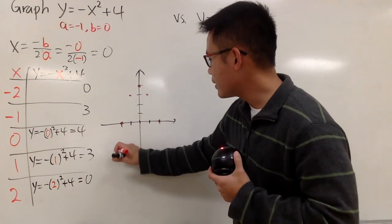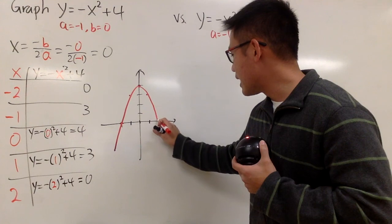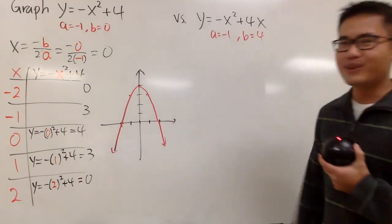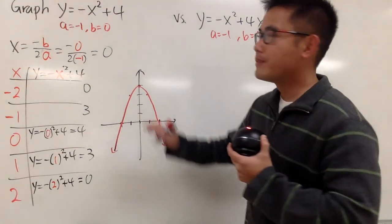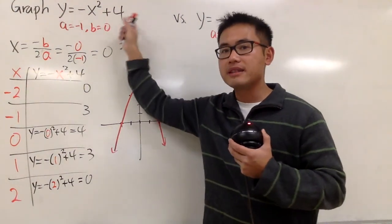So at the end of the day, we can just happily connect the dots, even though we get a sad parabola, a sad-face parabola like this. But it's still good because we finished the question. So be really careful. The b value here is 0 because we do not have any x terms.